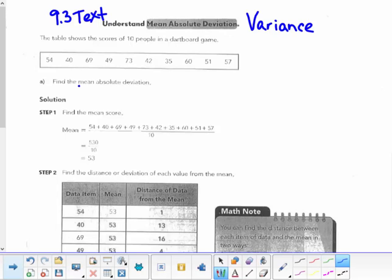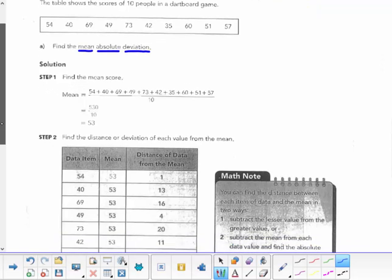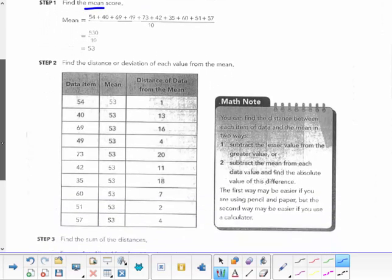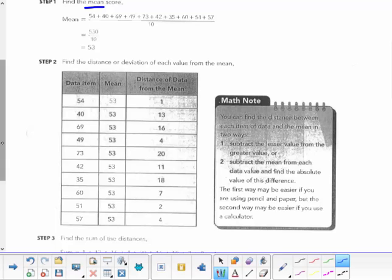The table shows the scores of 10 people in a dartboard game. Find the mean absolute deviation. Mean, okay, so we know we're probably finding an average. Absolute, absolute value. Distance from a value. Deviation, how far off is it from the mean. So find the mean score first. Yep, you're going to find the true mean. Add those 10 scores up, divide by 10, and you find out that it's 53.